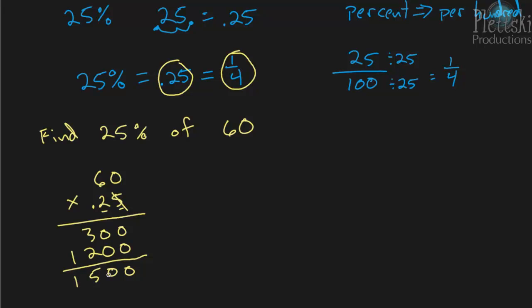And then remember the decimal has to go in a spot where 2 of the numbers are to the right of it. So 60 times 0.25 is 15. So 25% of 60 is 15.